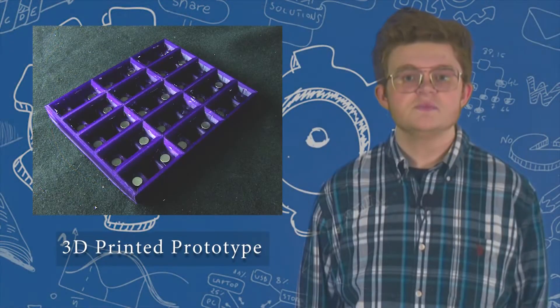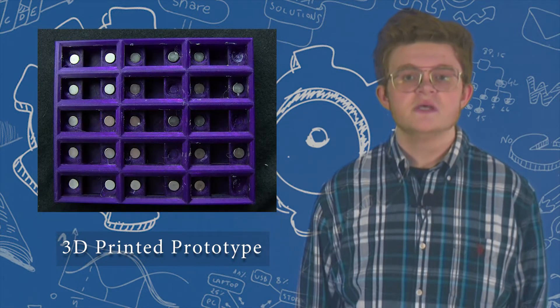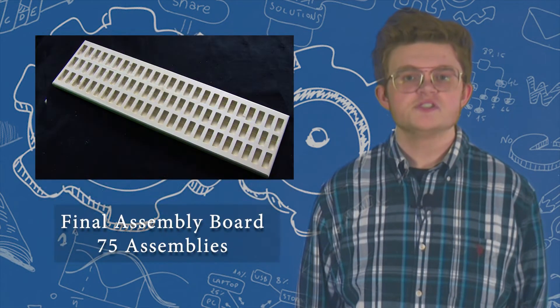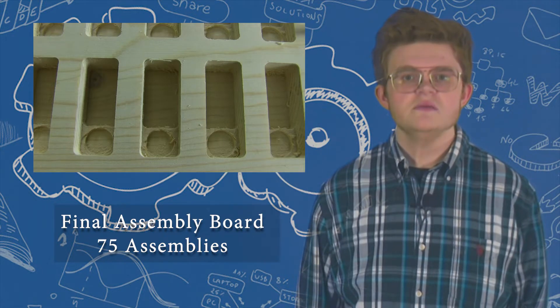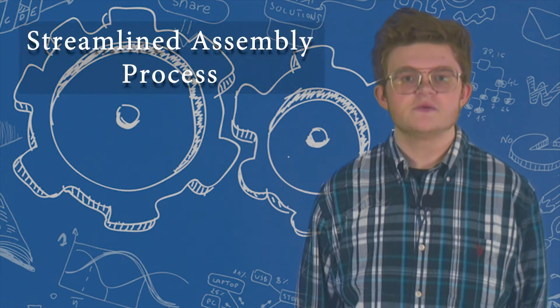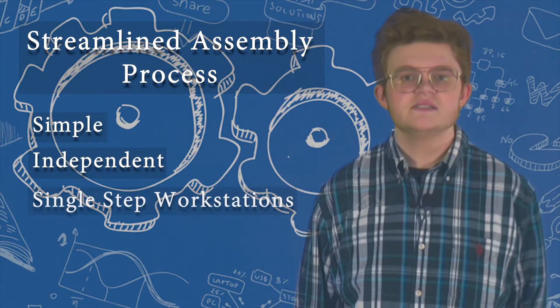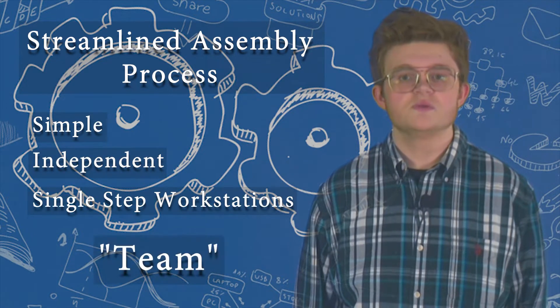The first assembly jig we created was 3D printed and held 15 parts. This worked so well that we made a few small changes and then scaled it up to hold 75 assemblies. With the jig design, we then streamlined the assembly process by creating three simple, independent, single step workstations where the employees could work as a team.